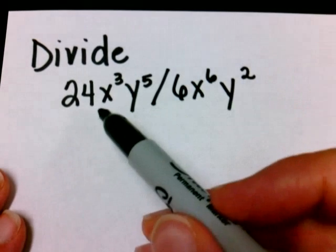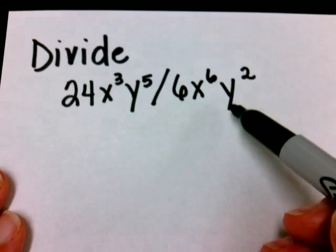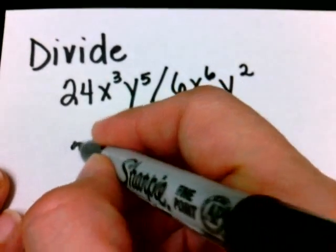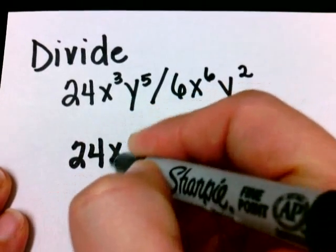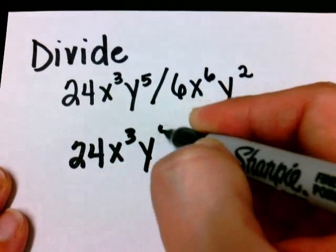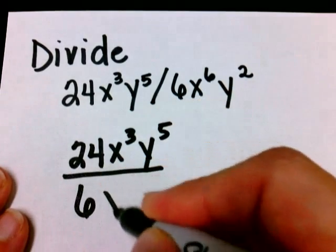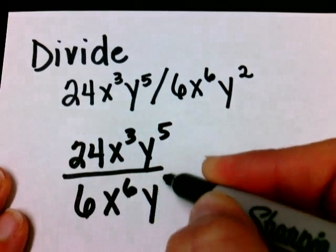When dividing monomials, sometimes we write them in the horizontal fashion like this, but I prefer them to be written in a vertical fashion. So I like to stack my terms so that I can see which one's on the top and which one's on the bottom.